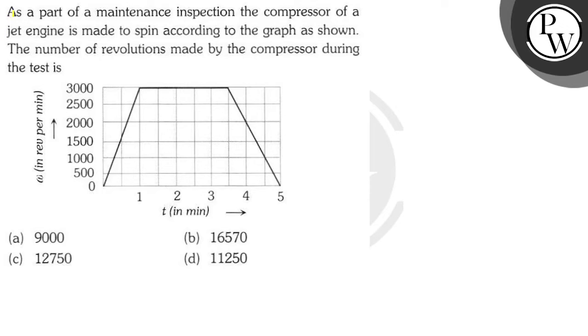Hello Bacho, now let's discuss the question. The question says as a part of maintenance inspection, the compressor of a jet engine is made to spin according to the graph as shown. The number of revolutions made by the compressor during the test is. Now to solve this particular problem, let's write down the key concept here.